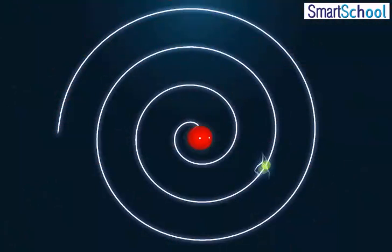While revolving in discrete orbits, electrons do not radiate energy, and so the atom doesn't collapse.